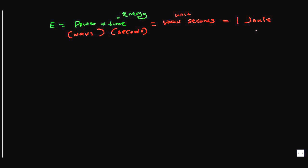One watt-second is essentially equal to one joule. In your physics lessons you might be using the unit joule or watt-second — they're the same thing. One watt-second equals one joule.